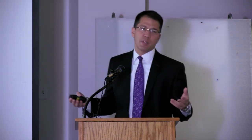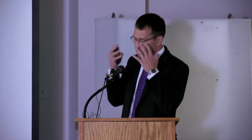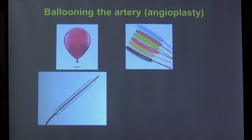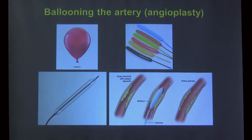Balloon angioplasty uses a long, thin balloon — not the decorative kind — threaded over a guidewire and inflated for one to three minutes at the site of a blockage. The balloon is filled with a small amount of the same contrast dye so its position can be confirmed under X-ray. After deflation and removal, imaging typically shows good resolution of the blockage.